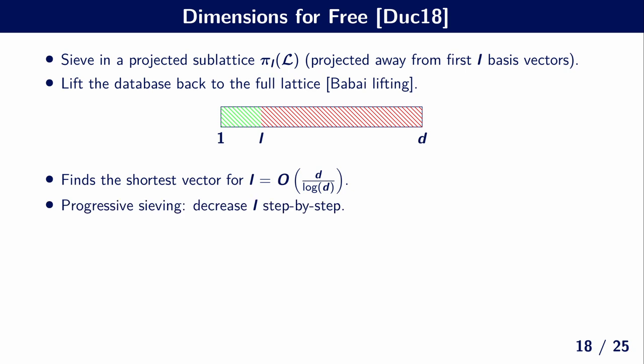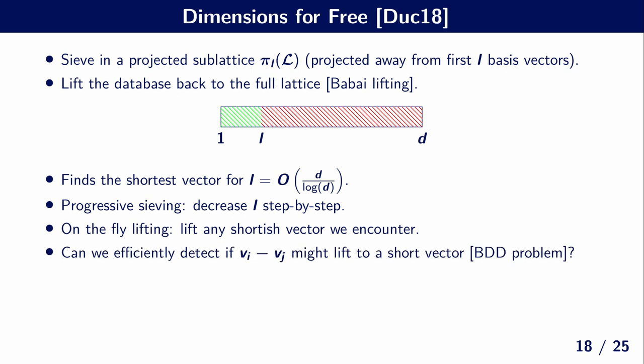And we can combine this with so-called progressive sieving. Instead of fixing this L a priori, we can start with an L that's pretty large, and so a sieving dimension that's pretty small. And then just slowly, step by step, decrease this L until the lifting actually finds the shortest vector on the full context. And this also means that if we do on-the-fly lifting, namely we just lift any shortest vector that we encounter, then we are much more likely to find this short vector.